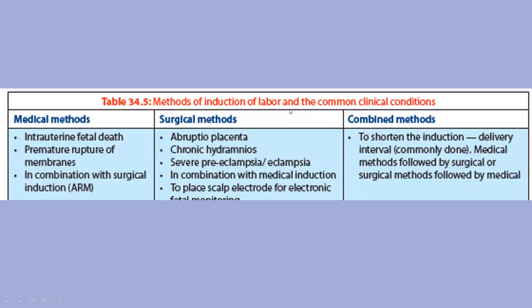Methods of induction of labour and common clinical conditions: medical methods are usually used when there is intrauterine fetal death, premature rupture of membranes, and in combination with surgical induction (artificial rupture of membranes). Surgical methods are commonly used for abruptio placentae, chronic hydramnios, severe pre-eclampsia or eclampsia, in combination with medical induction. The combined method shortens the induction-to-delivery interval — you start with the medical method and later add the surgical method.